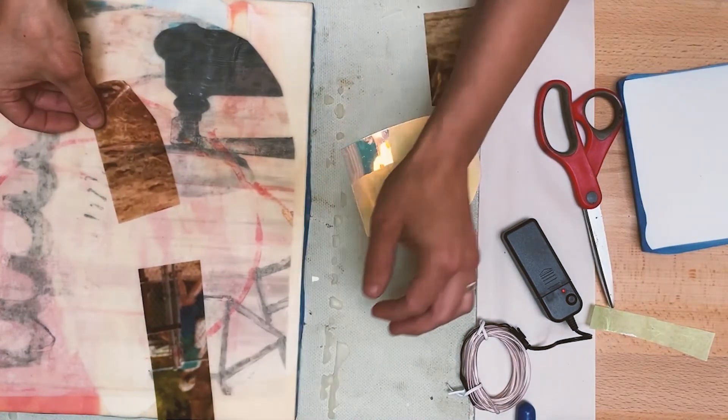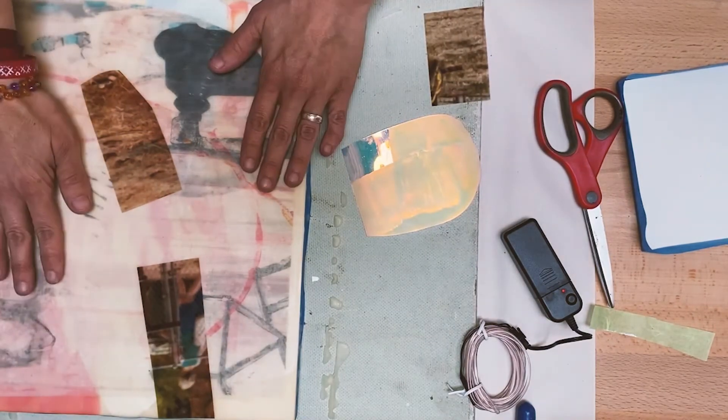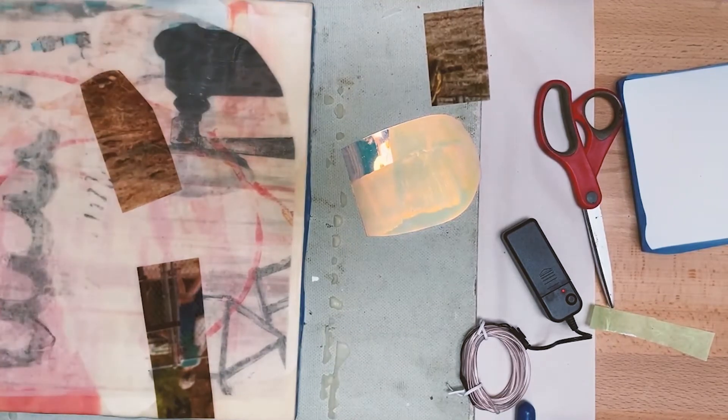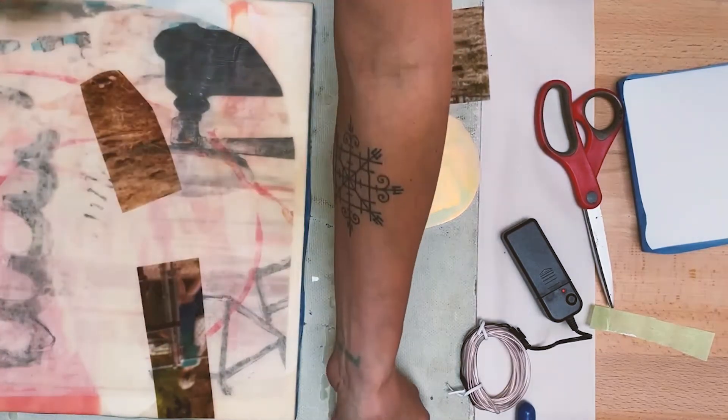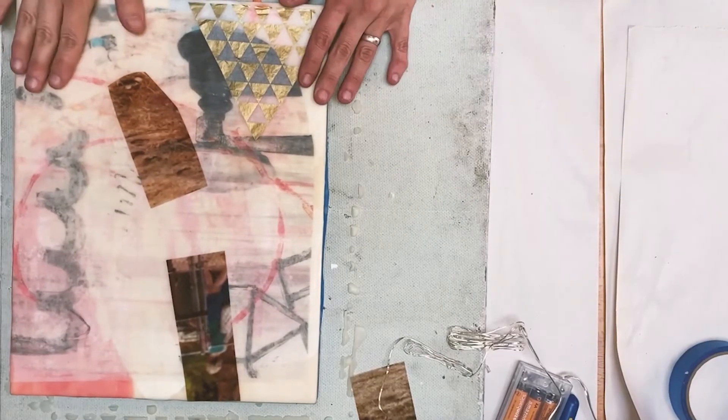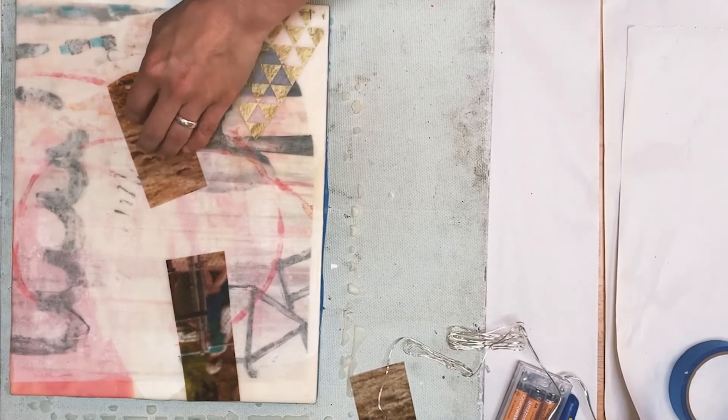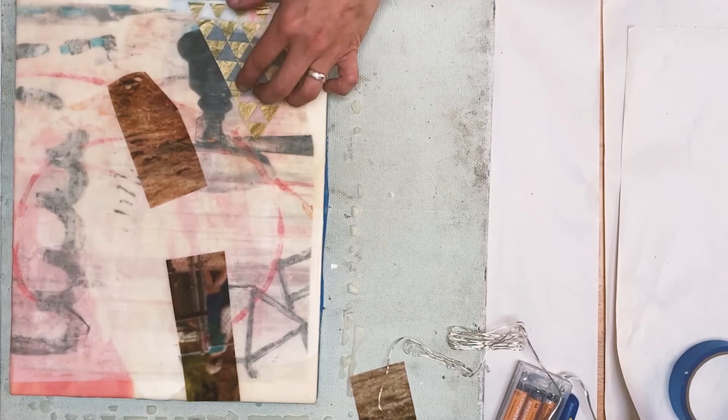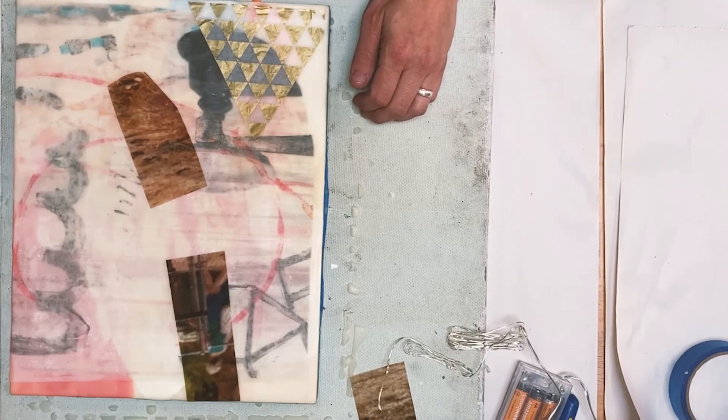I can always scrape it off and do something different. And then this iron will also play a role in how that gets put on there too. Okay. Now it's time to coat the pictures with the clear wax. And then I'll try to fine tune it with my iron. See how that works.